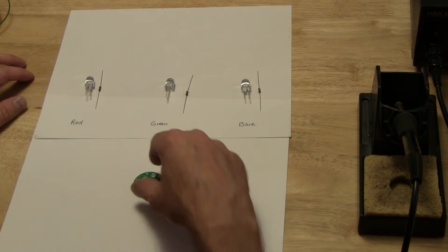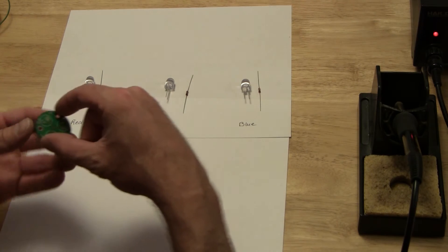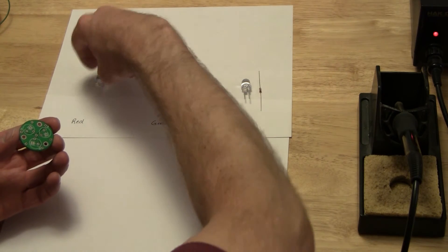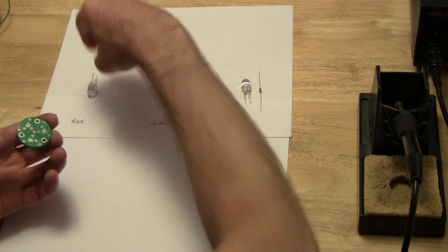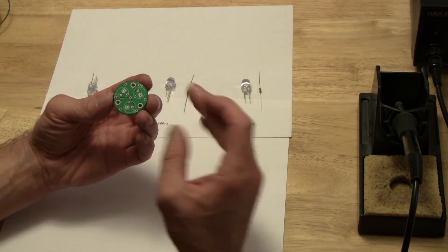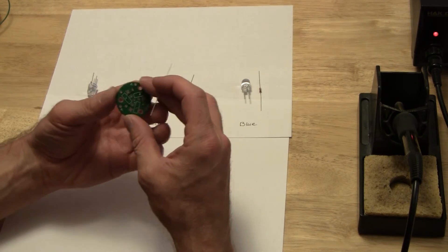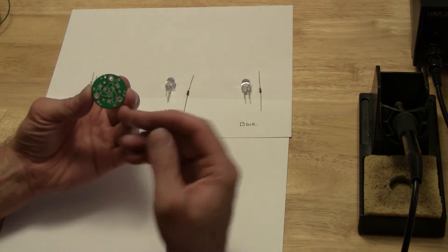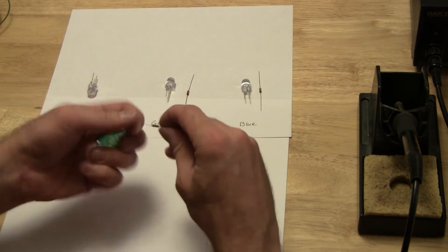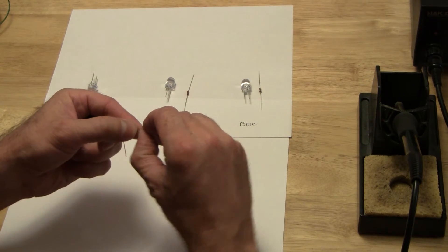So first we'll put in all the resistors. We'll put these into their respective slots. So here's the red resistor, put that right here. You want to bend the lead so it'll go in there properly.